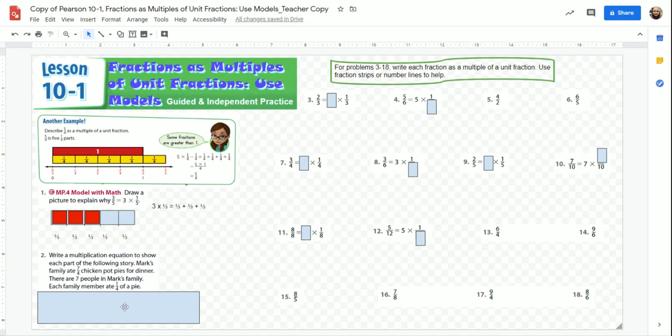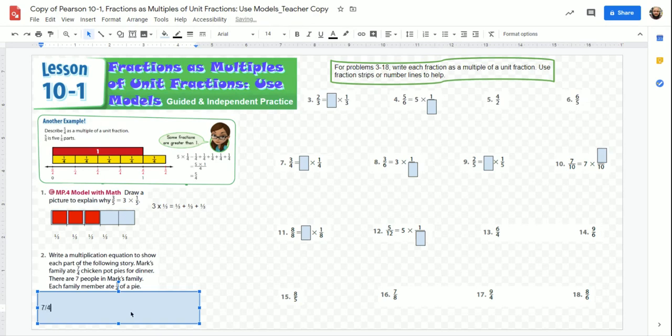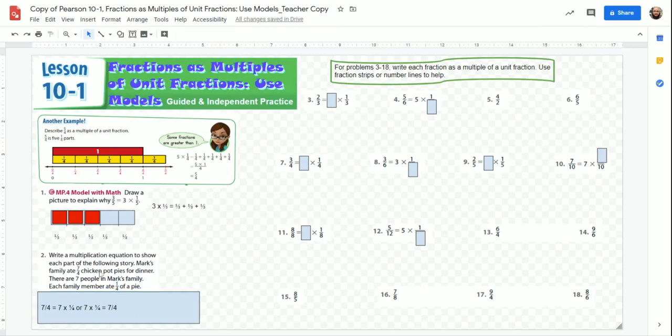Now this is where this gets kind of interesting. Mark's family ate seven-fourths or seven-quarters of a chicken pot pie for dinner. It looks like what they're trying to tell us here is that each member ate one-quarter of a pie. Let's start writing this out. This one is just a text box. All you have to do is click inside it. They're just talking about equations, so you don't have to draw this one out. We're going to just write it out. Seven-fourths or seven-quarters equals seven times one-fourth. Or seven times one-fourth equals seven-fourths. What's important here is that you need to look at what they're asking you for. They're asking you to write a multiplication equation. That's all you have to do here.